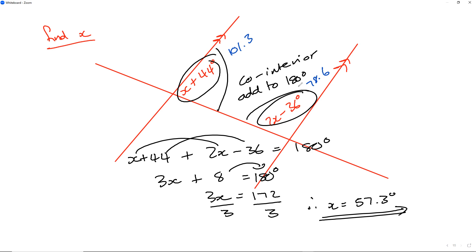So if I add those two together, 78.6 plus 101.3, it comes to 179.9, which rounds up to 180 degrees. All right, so yeah, a bit of rounding, but that would be the solution for this one.